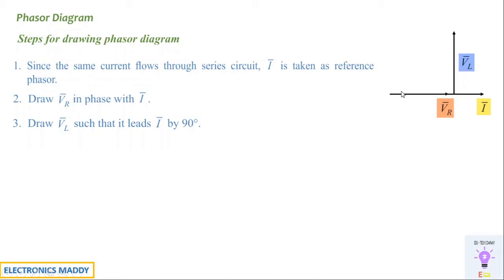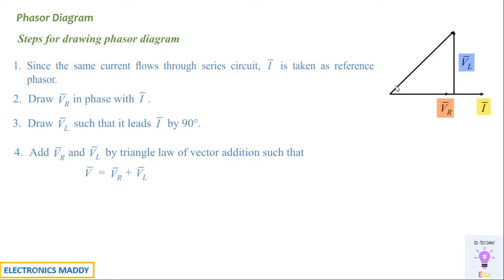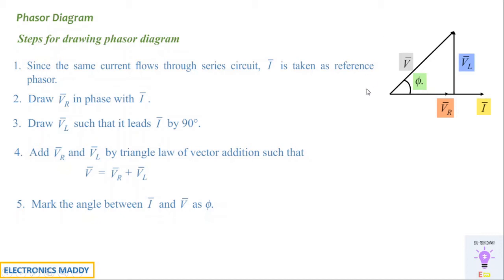To complete the circuit, using the concept of the impedance triangle — or Pythagoras' theorem — we take the vector sum of VR and VL. The resultant is labeled V-bar, and the angle between I-bar and V-bar is labeled phi. These five steps define how the phasor diagram is drawn. If this concept is understood, you will be able to solve any number of numericals — it is a foundational concept in electrical engineering.